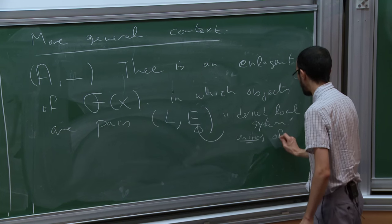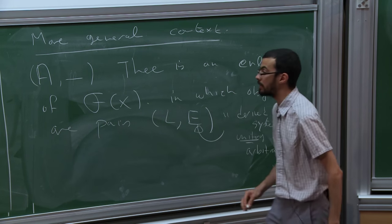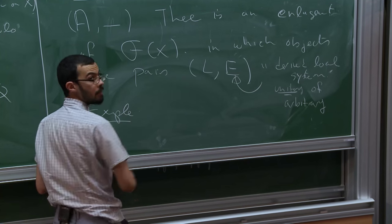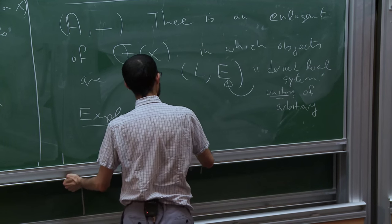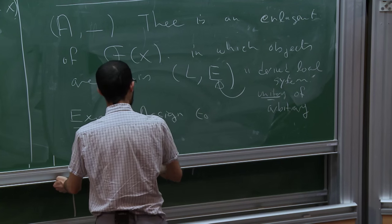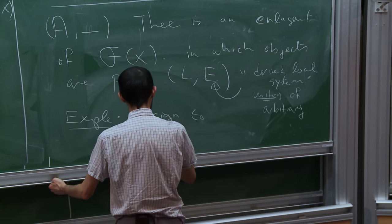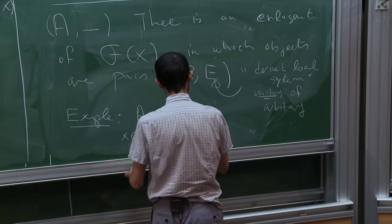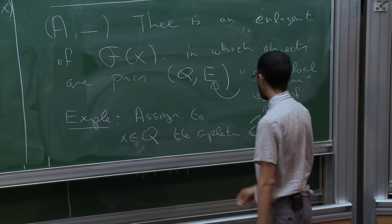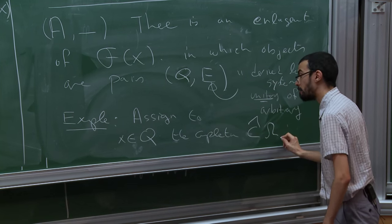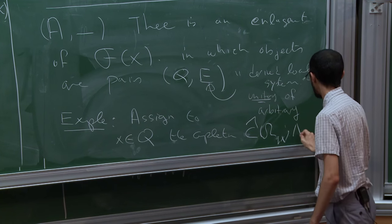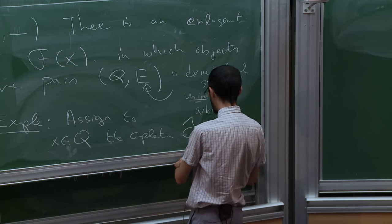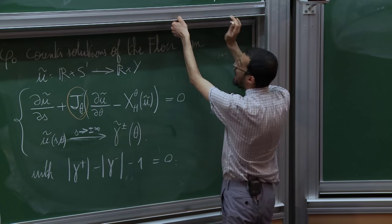Unitary, but of arbitrary rank. So you could ask, what example should I have in mind? The example you should have in mind is something I already introduced — assigned to any point x in Q, the completion of the chains on the space of paths from the base point to x, with coefficients in Λ. So this is the completion I introduced last time. You could naively think you're just going to take the chains on the space of paths with coefficients in Λ, but as I showed you last time, that's not a very good notion.